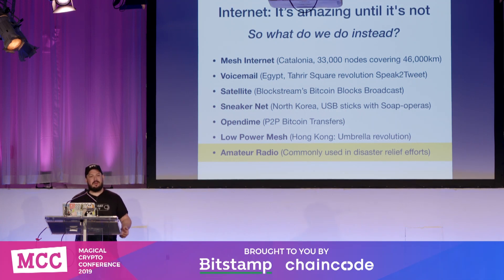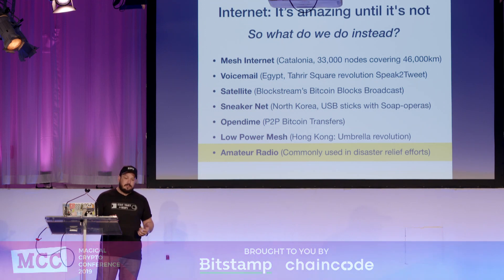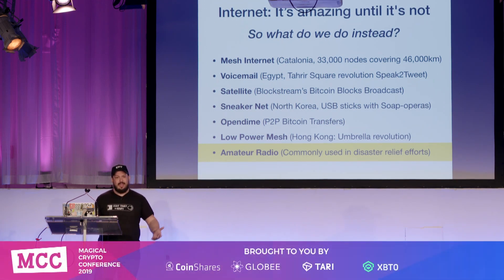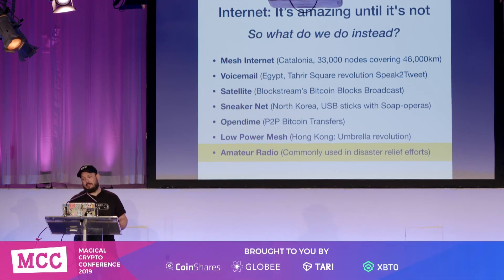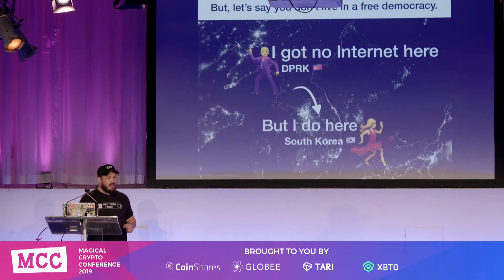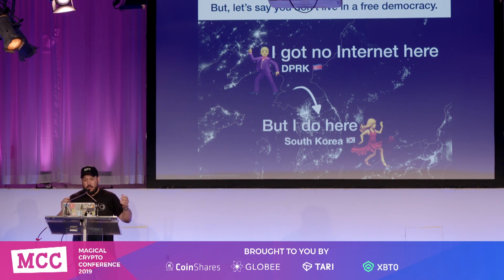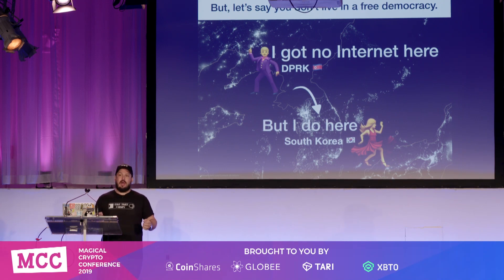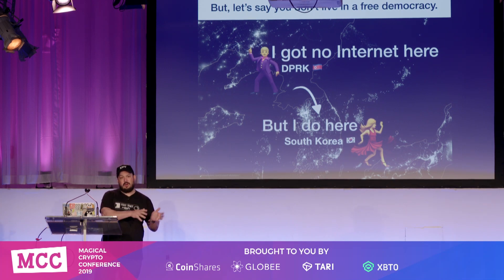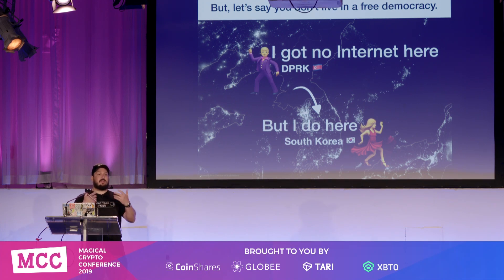Amateur radio is very powerful because if you're using lower bands, you can actually transmit across the planet with very little power. For example, if you were in North Korea and you don't have internet there, but in South Korea everybody's connected, you can transfer the data via amateur radio from your locality to somebody who could relay the transaction for you.